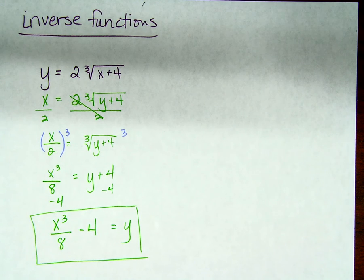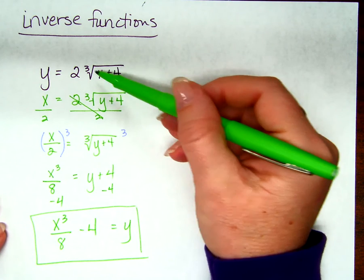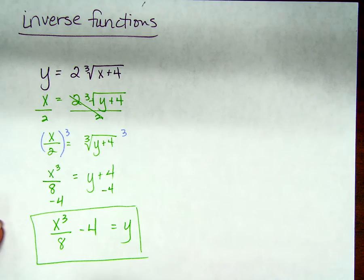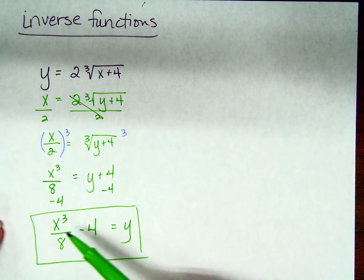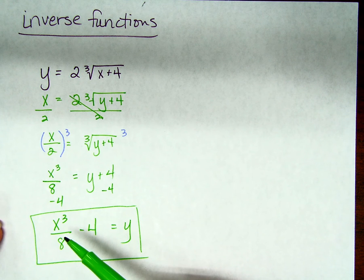Now, does it make sense to you that a cube root function would have an inverse that is a cube? Does that make sense? Yeah, because last week when we talked about these to begin with, we decided that square roots and squares were inverse functions, right? So does it make sense that cube roots and cubes would also be inverses, okay?